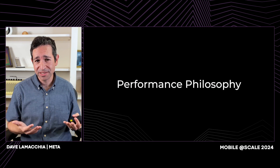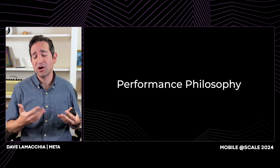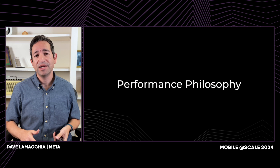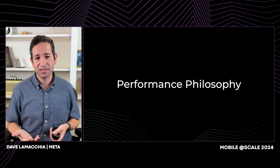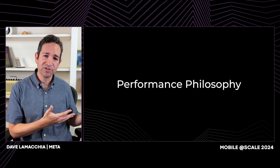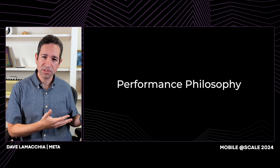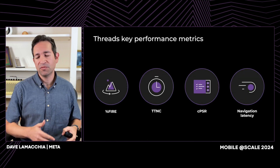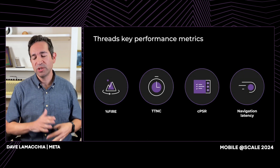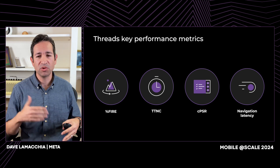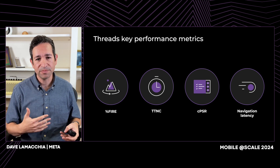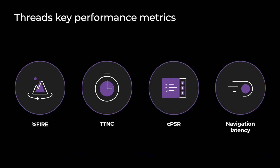Our performance philosophy on Threads is really all about providing the best user experience, and to do that we have to measure a lot of things. Let's dive into some of the metrics we consider the most important. First, crashes — nobody wants the app to crash, and that is the most important. But some of our other metrics, especially around content creation and consumption, are very important too.